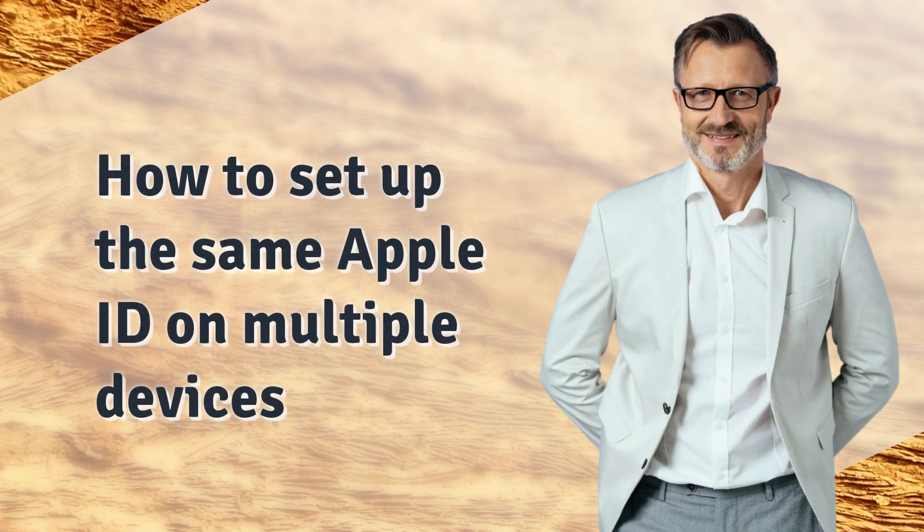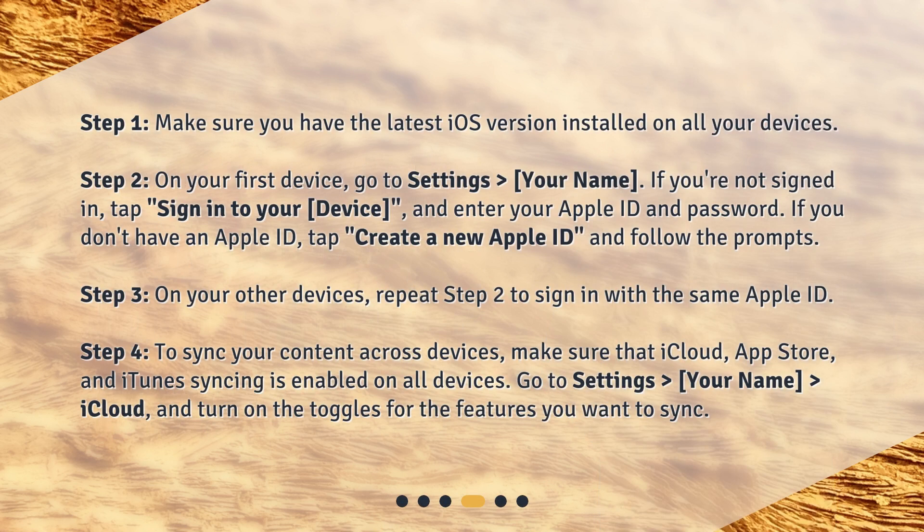How to set up the same Apple ID on multiple devices? Step 1: Make sure you have the latest iOS version installed on all your devices. Step 2: On your first device, go to Settings > your name. If you're not signed in, tap "Sign in to your device" and enter your Apple ID and password.